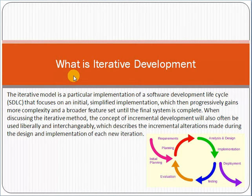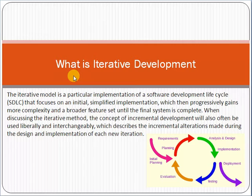Coming back to our main topic — iterative development. Whenever we are implementing projects, for example website development, this is a good example of iterative development. What happens is: we develop a simplified version of a website, show it to the customer, get their feedback, then develop again, test, develop, test — until we reach a point that is acceptable to the customer.